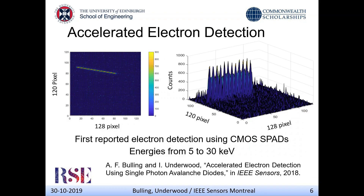The precursor to this work — which we presented last year at IEEE Sensors — was the use of the SPAD image sensor for electron detection. We reported the first use of a CMOS SPAD for the detection of accelerated electrons. We placed the sensor in a scanning electron microscope, which raster scans the electron beam across the image sensor, and we were able to detect energies from 5 to 30 keV. You can clearly see in the images that during a specific exposure time, you can see the activated pixels as the electron beam goes across the image sensor.